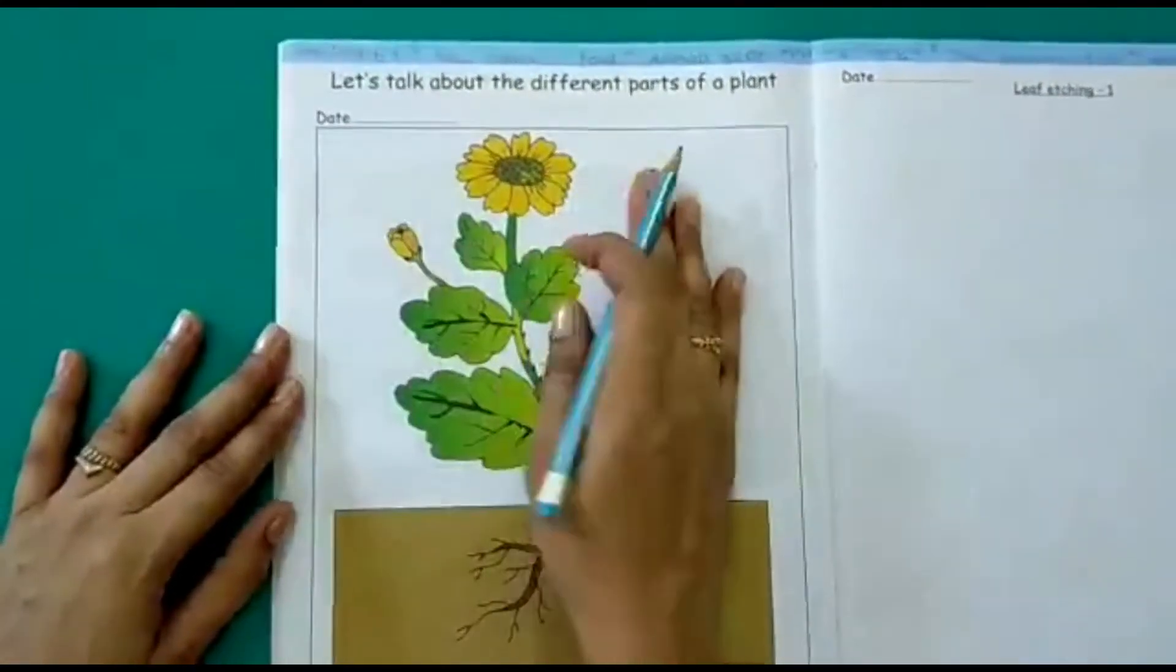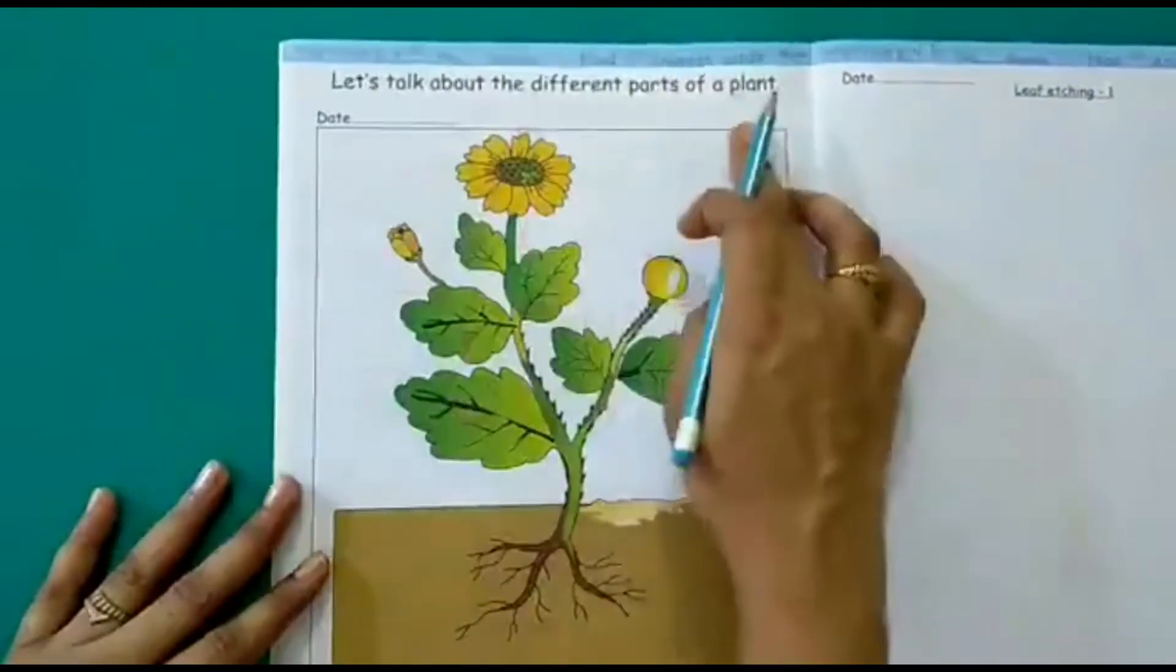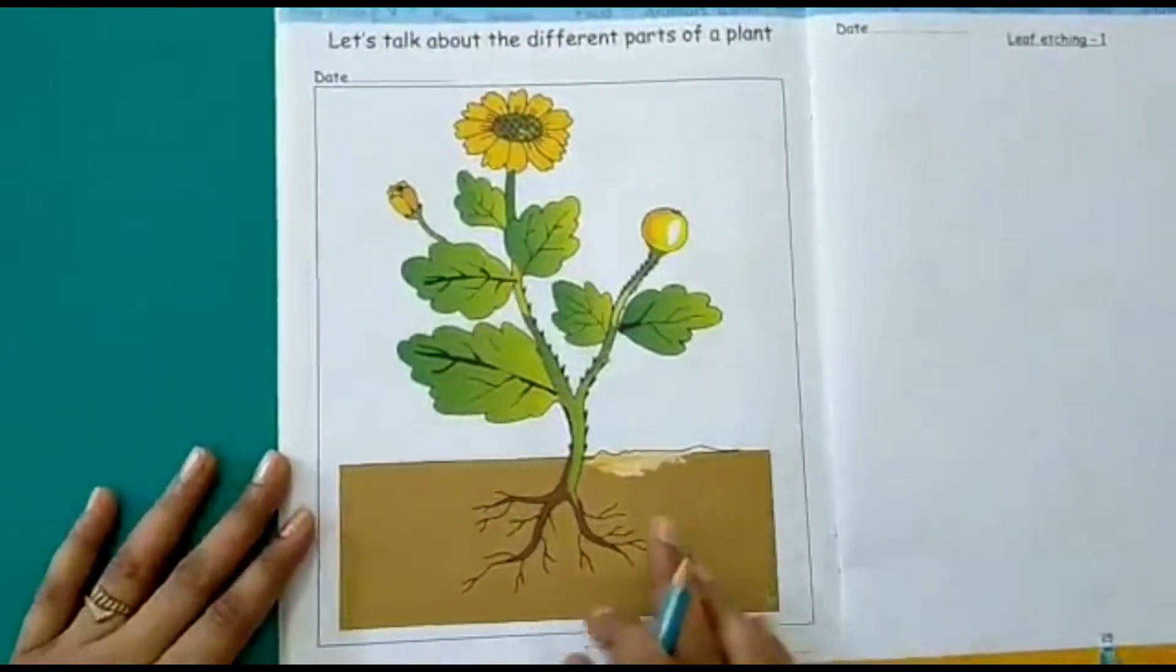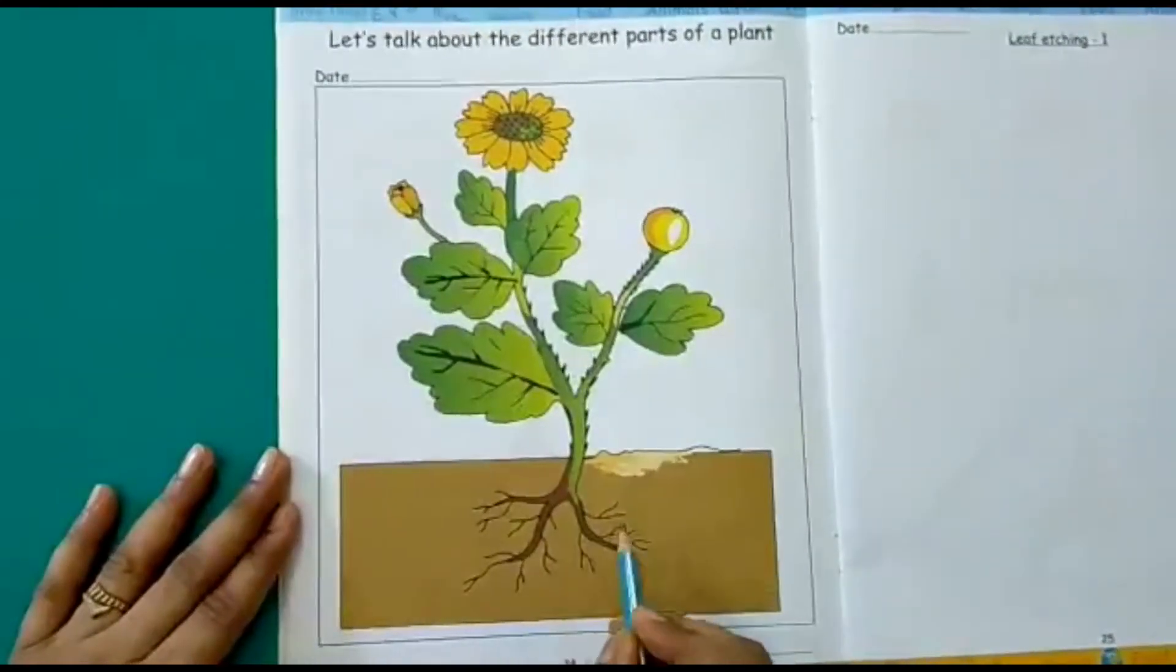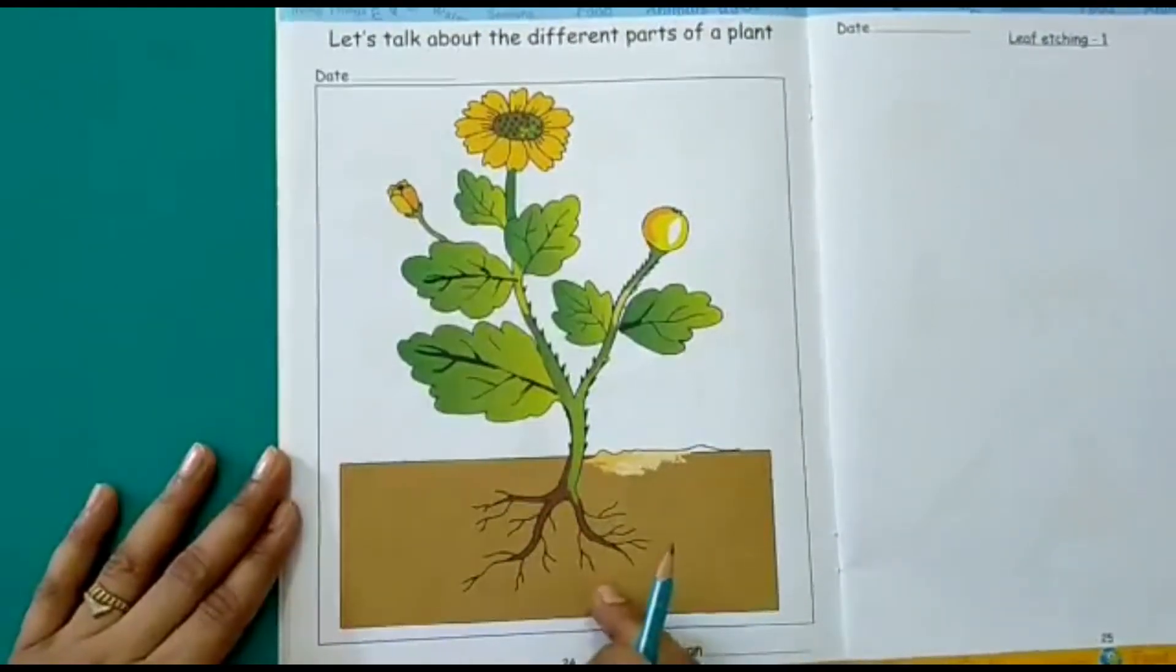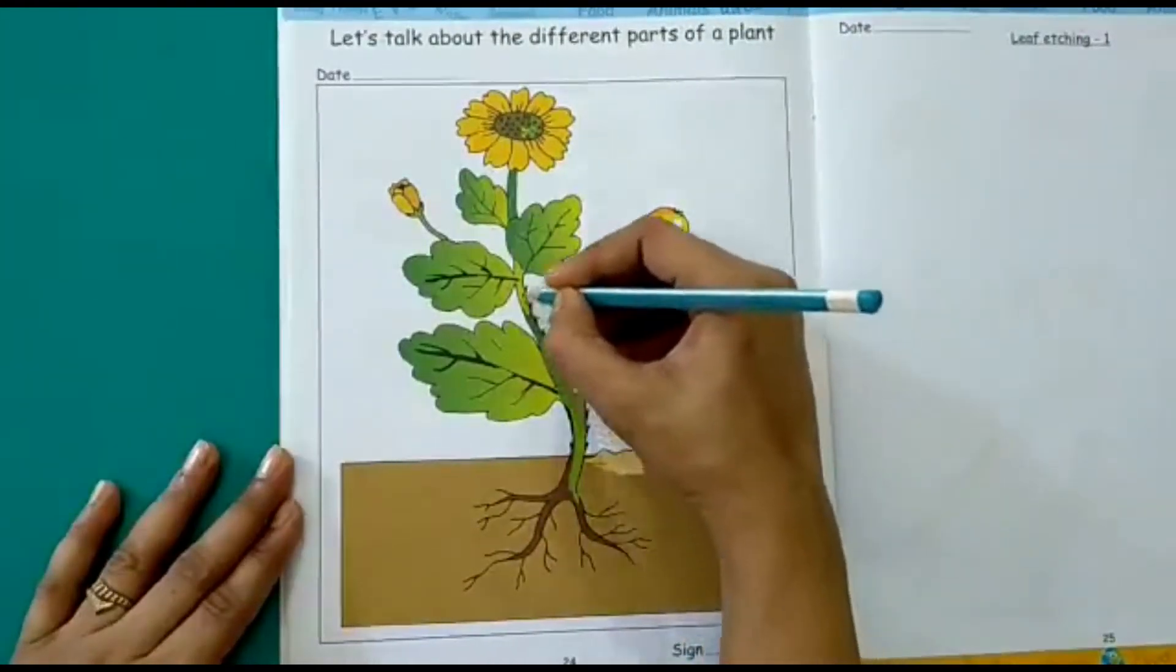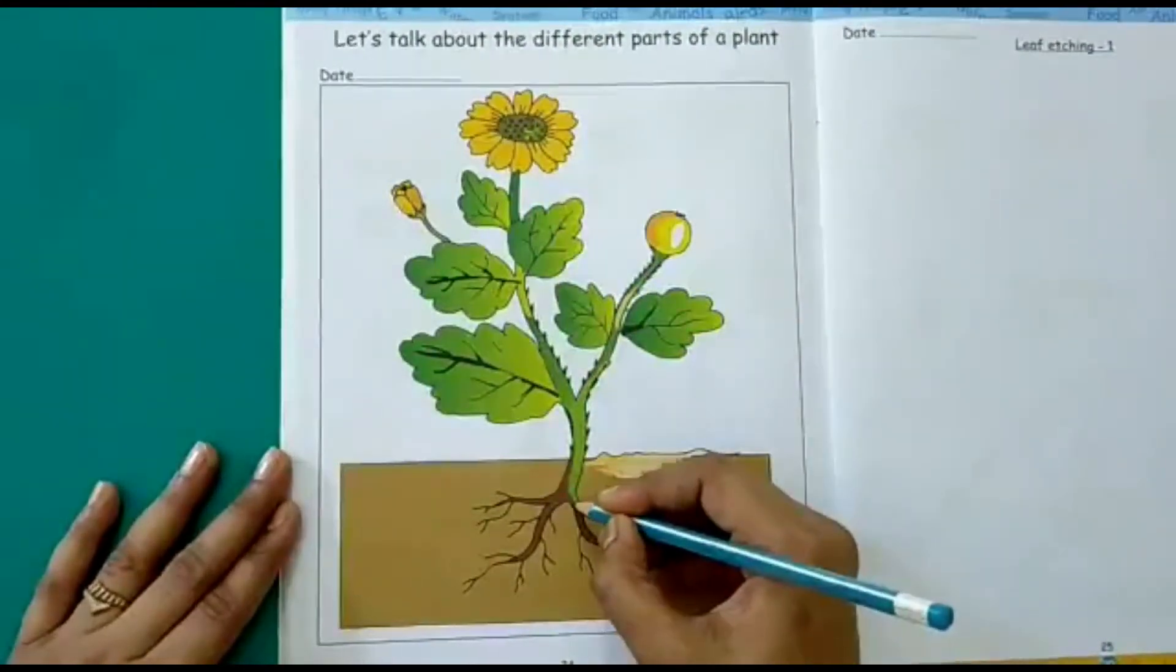We will be talking about different parts of a plant. As you can see we have a picture of a plant here. So now let's see what different parts does a plant have. The very first part that we will talk about is the roots. This is the roots of the plant which is below the soil. And what is this? This is the stem. This part is the stem of the plant.